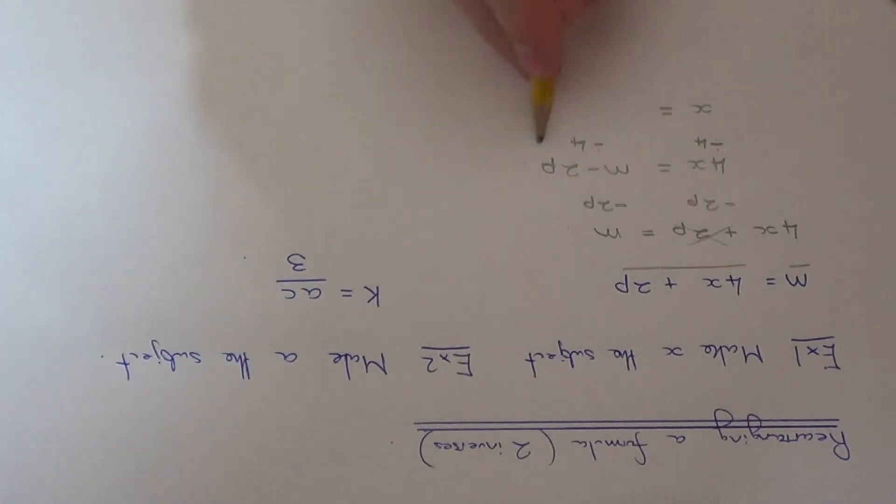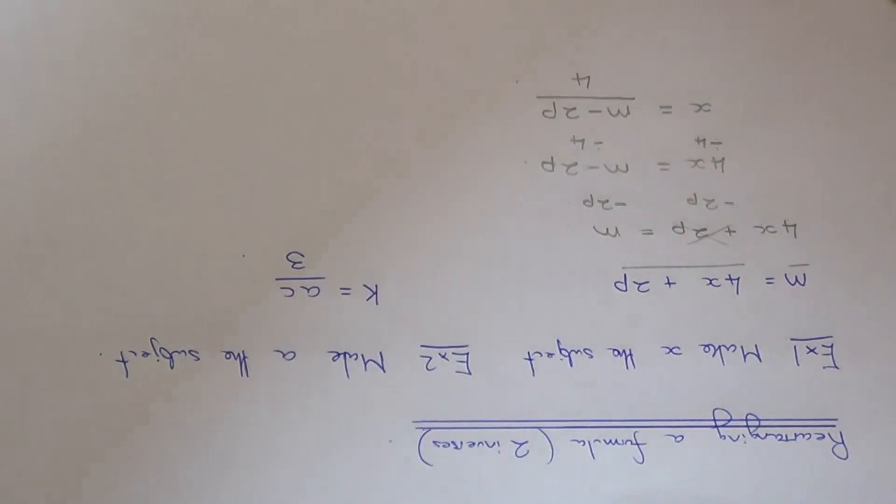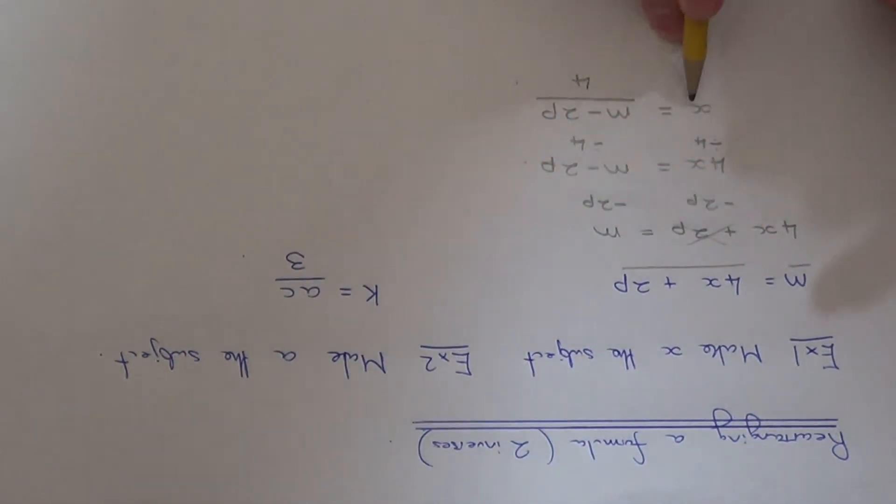We just need to think now how we'd write this divide by 4 in algebra, and you do that by writing it as a fraction like so. We have now made x the subject.